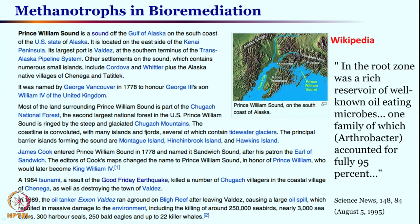Prince William Sound is in the Gulf of Alaska on the south coast of the US state of Alaska, located on the east side of the Kenai Peninsula. In 1989, the oil tanker Exxon Valdez ran aground on Bligh Reef after leaving Valdez, causing a large oil spill in Prince William Sound that resulted in massive damage to the environment, including the killing of around 250,000 sea birds, nearly 3,000 sea otters, 300 harbor seals, 250 bald eagles, and up to 22 killer whales.